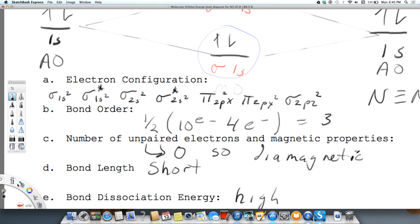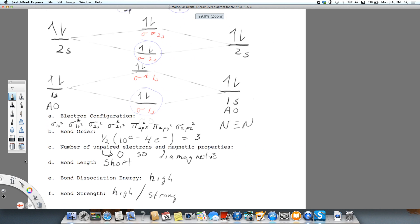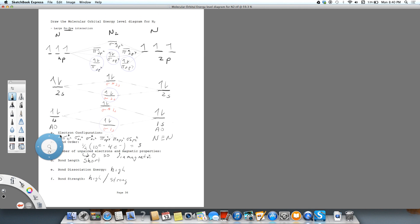Again, what we did was we simply got this electron configuration by just taking these orbitals, those molecular orbitals, in order.